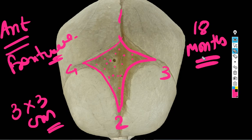This anterior fontanelle allows these bones to overlap each other and to modulate while in labor. This fontanelle is also called bregma.